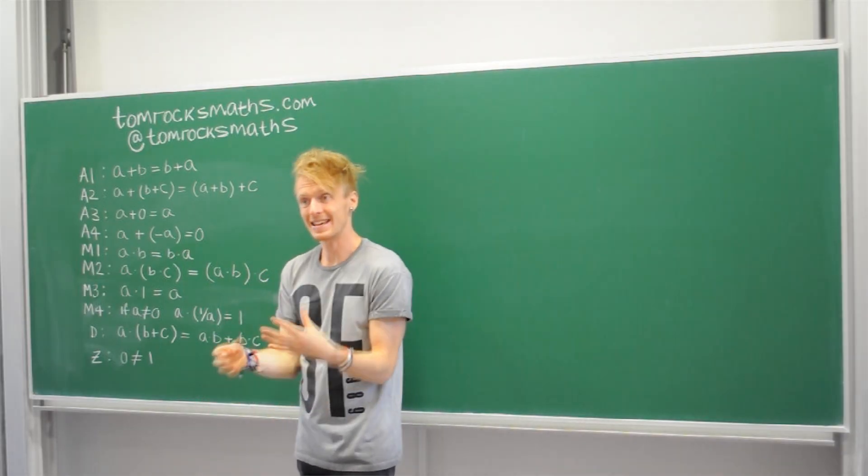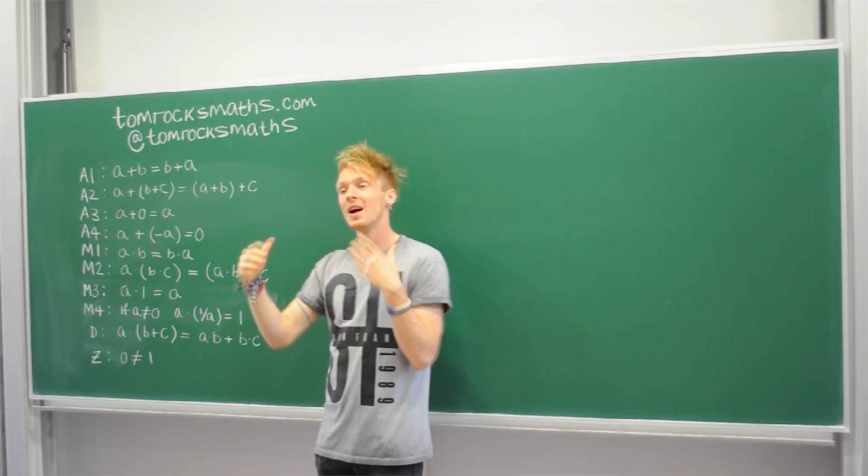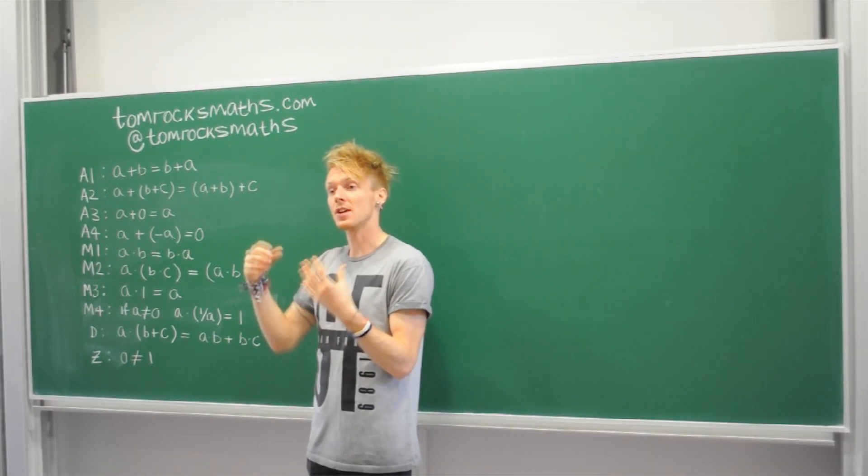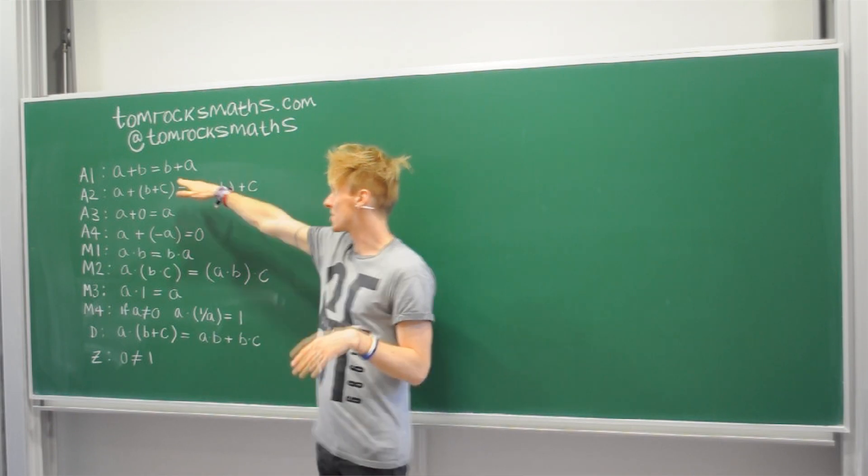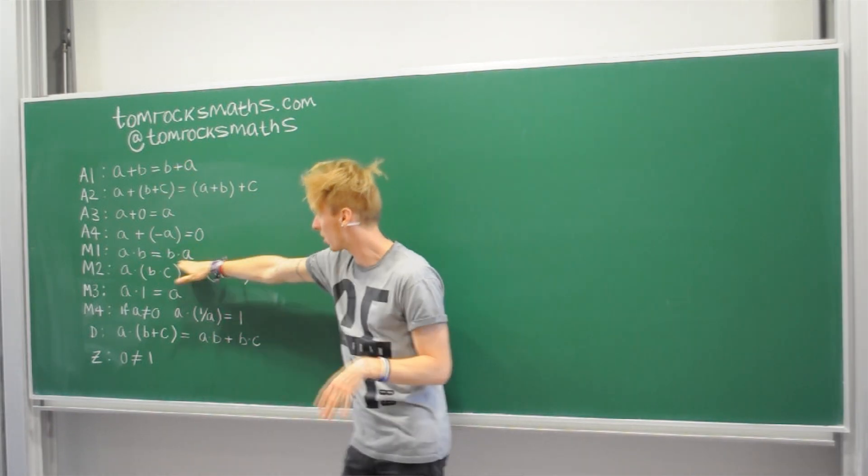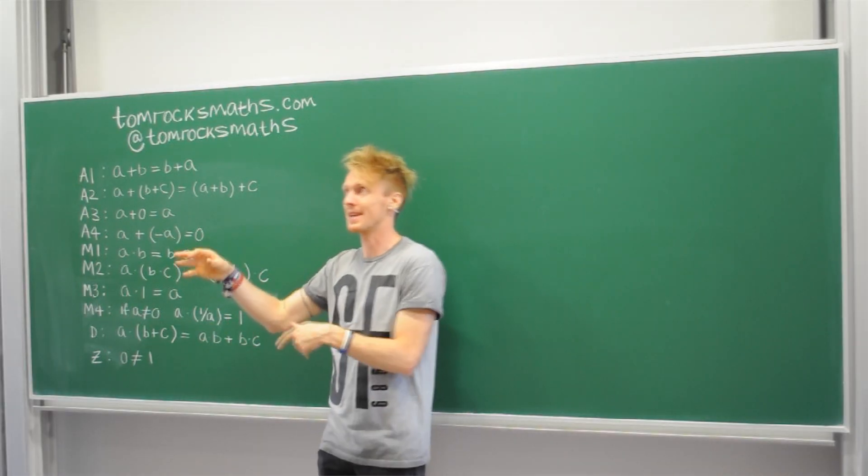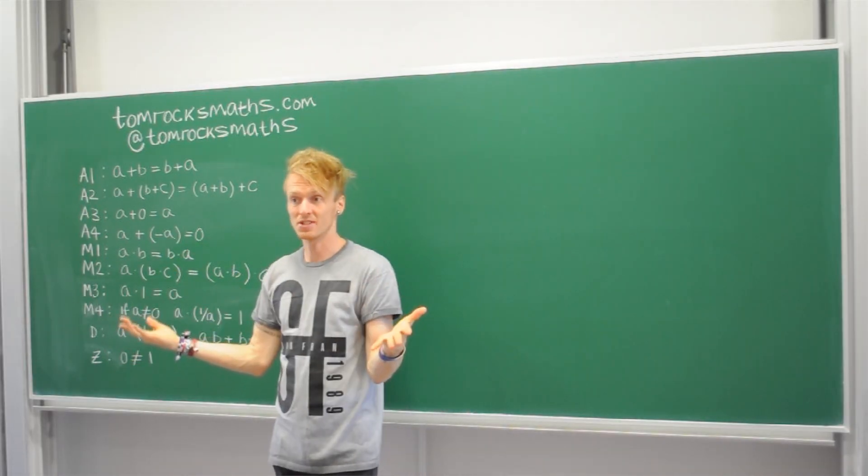And now moving on to the multiplication rules, M1 through to M4. They follow the same pattern. So like we had the associative law for addition in A1, we have the same law for multiplication in M1. So it's saying that 2 times 3 is the same as 3 times 2. They're both 6.